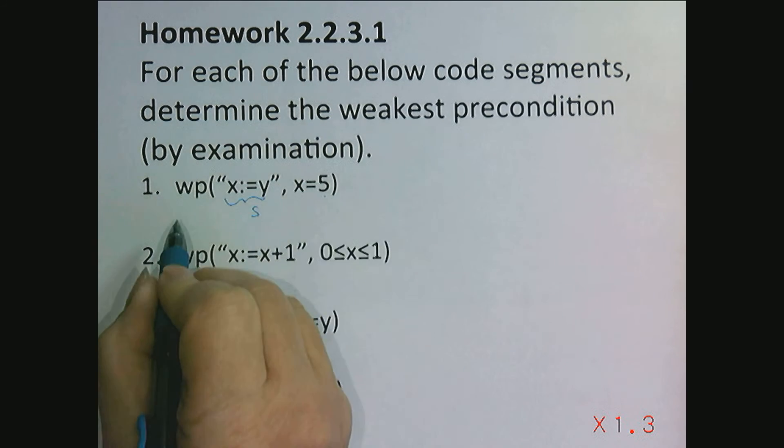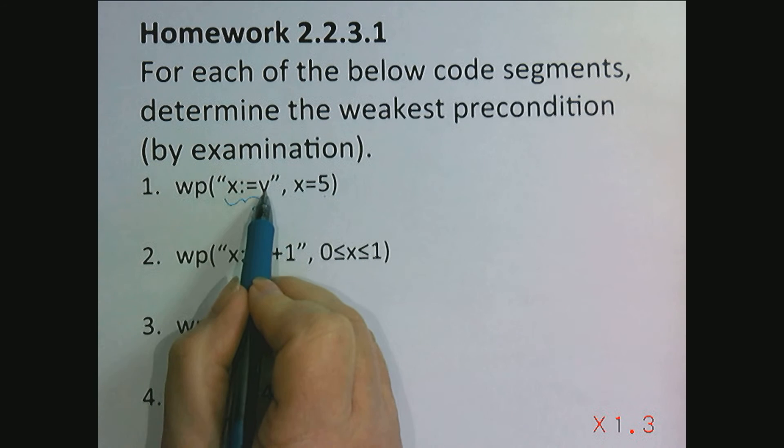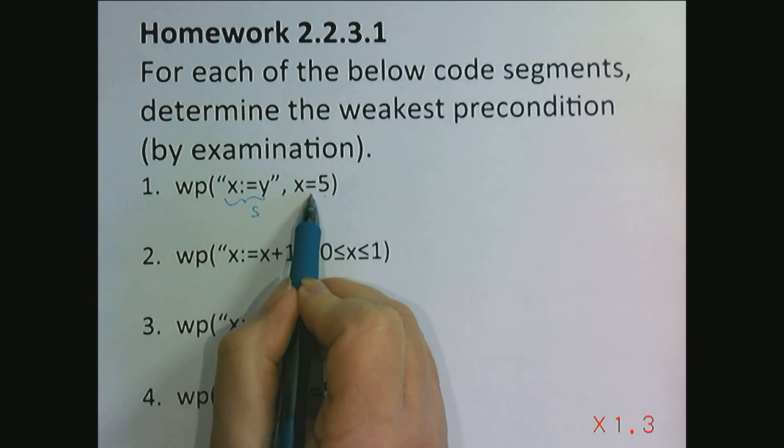So in problem number one, we wanted to find the weakest precondition of x becomes y where the post condition is x is equal to 5.